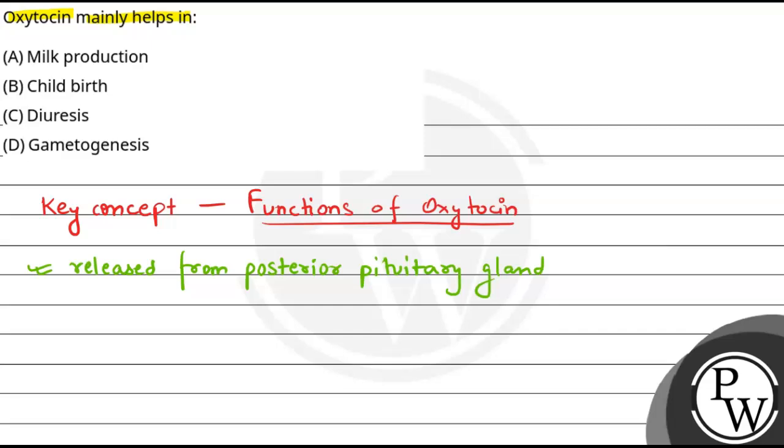Now, if we talk about how it is produced, stored, and released from the posterior pituitary gland, we can say that its production is in the hypothalamus. If we talk directly about its function, what is oxytocin's main function?